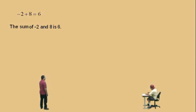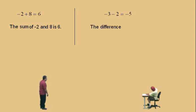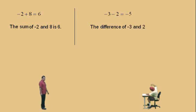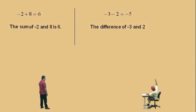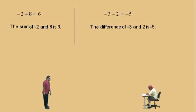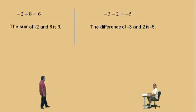Let's do another one. Now, what do we have, Charlie? The difference. The difference — that's right. The difference of what two numbers? Negative 3 and 2. Negative 3 and 2 — you got that one right. Now bring us home, Charlie. Is negative 5. Very nice. The difference of negative 3 and 2 is negative 5, and that's true.